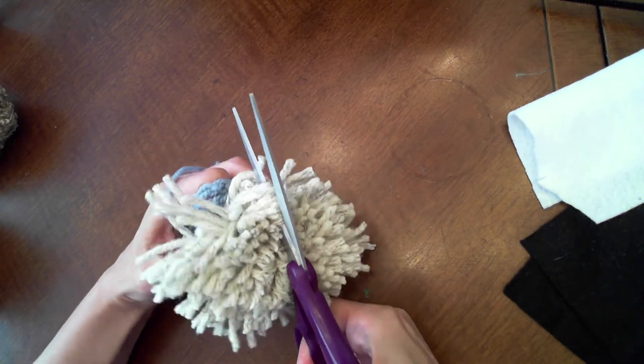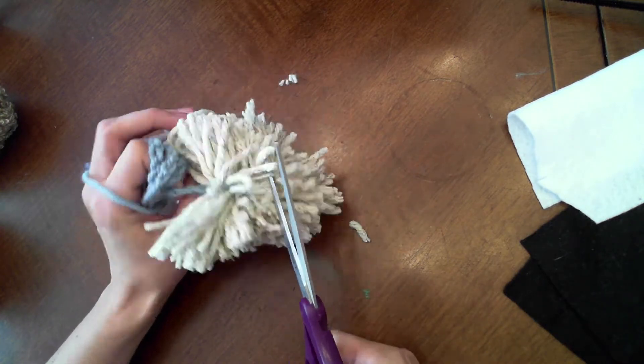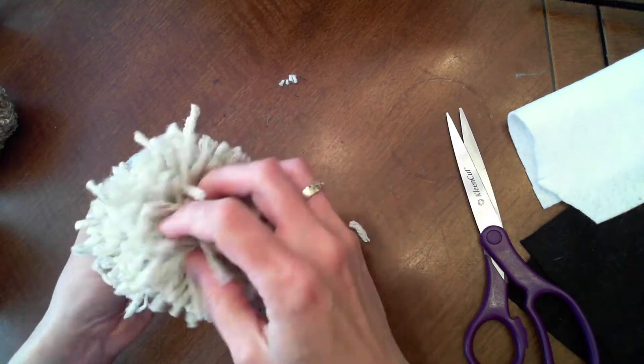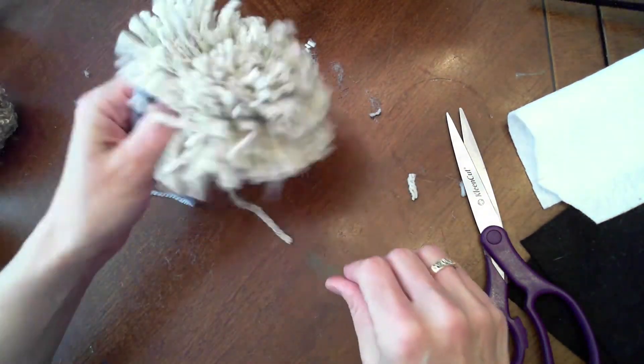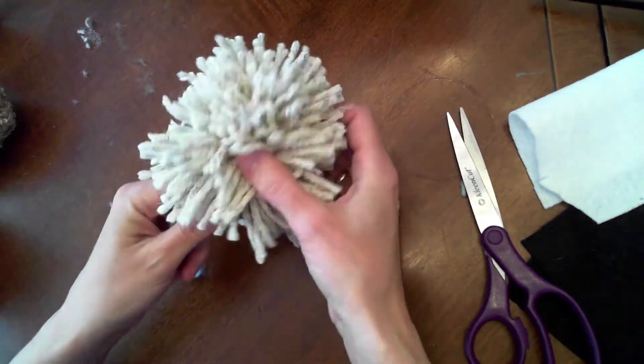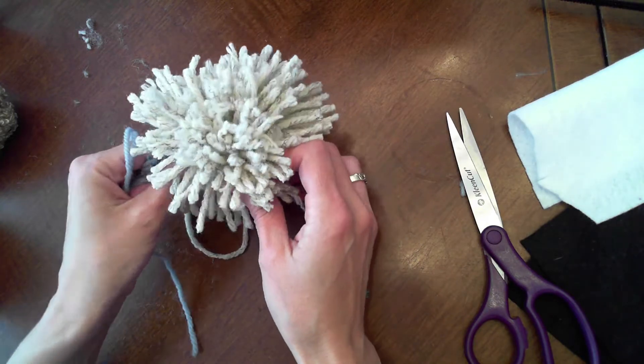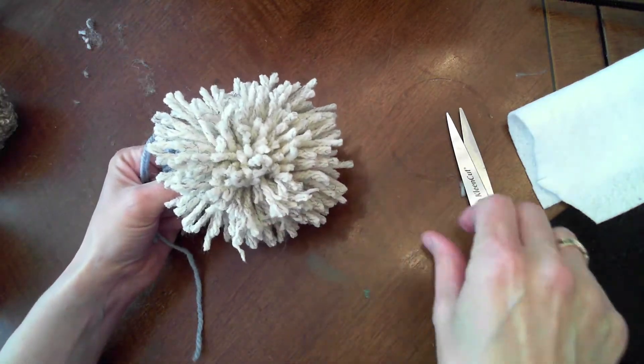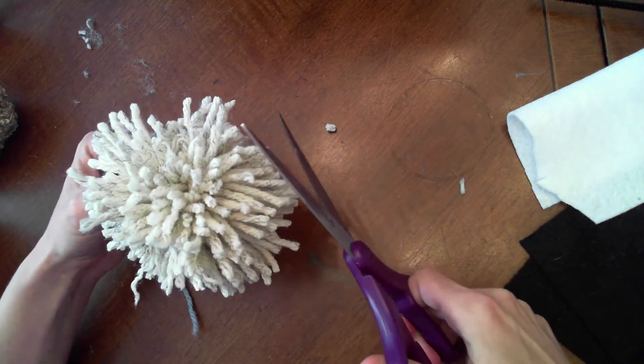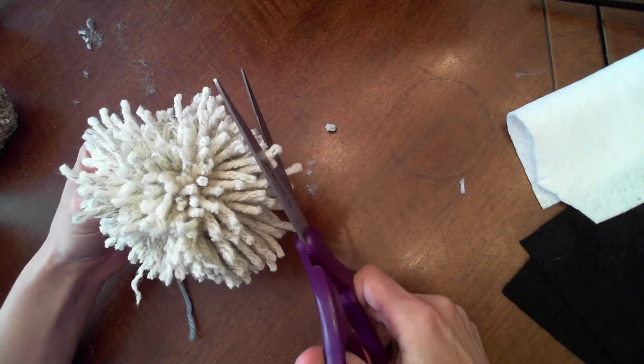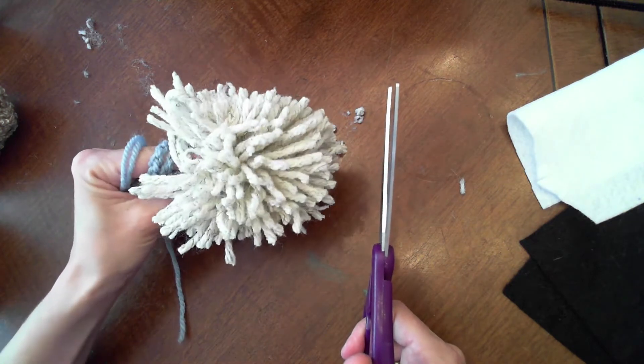And don't worry as you're cutting if things look a little uneven. That's totally fine and normal. We are going to take a minute to trim your pom-pom so it looks more even. I'm going to give it a little shake. I see all the yarn bits flying out totally fine but you can see that I have some yarn that's longer than the others. When you're trimming your pom-pom just remember that you can always cut more but you can't put it back on.